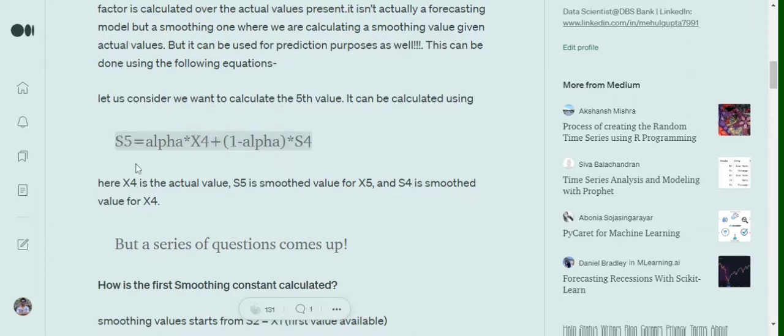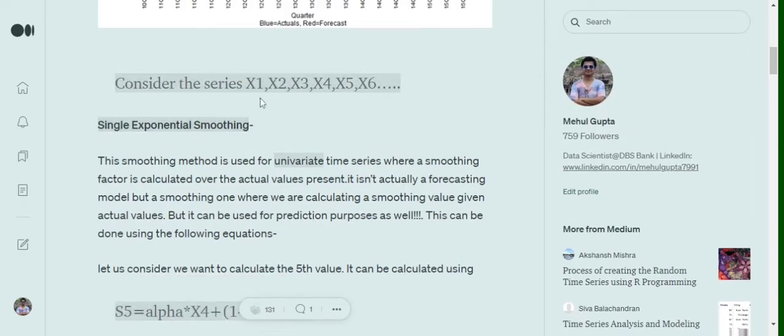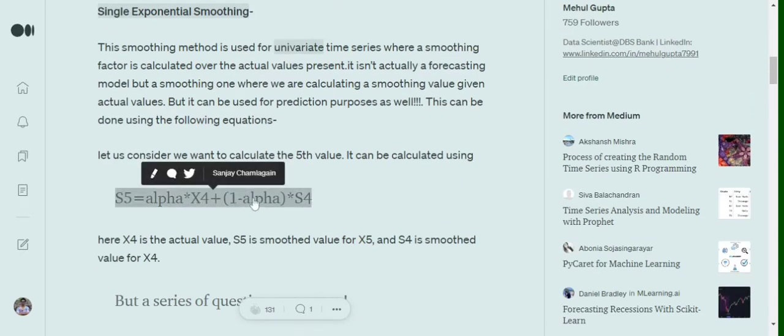Now let us understand what this means. Assume that we are trying to calculate the fifth smoothing term. In that case, we assume alpha to be some constant. Alpha times the previous time series term, that is X4 from the original time series, plus 1 minus alpha times S4, that is the previous smoothed term that we have calculated.